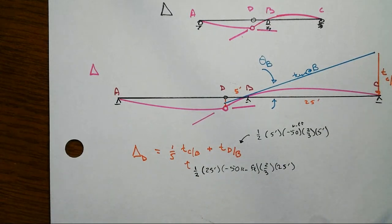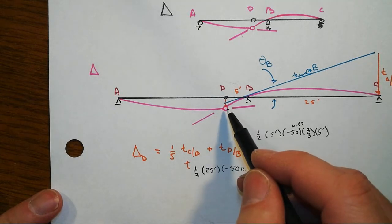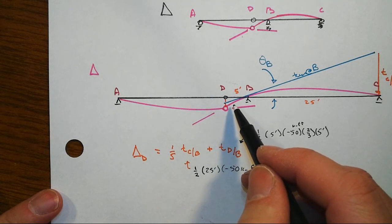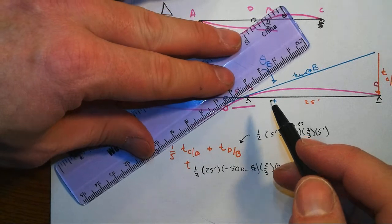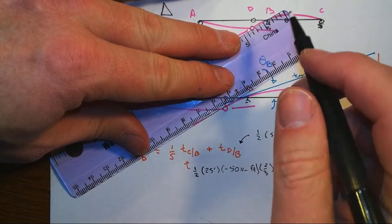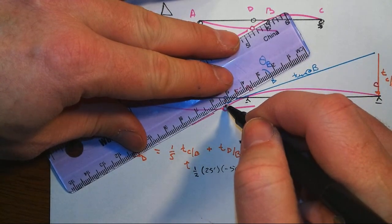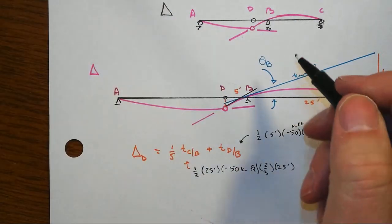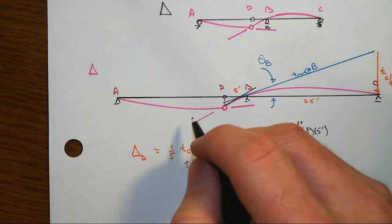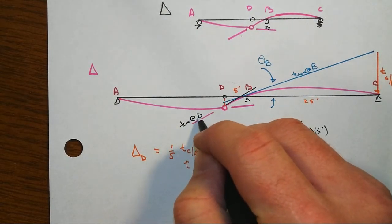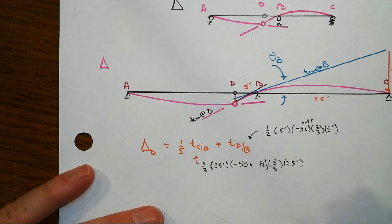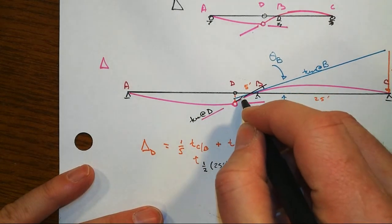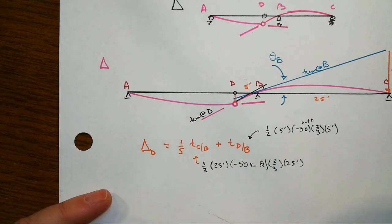Now, what that doesn't give for us though, is what's going on with this slope right here. The way we're going to get that is by noting two things. One, if we take a tangent at D, that's this one right here, tangent at D, then the relative angle change, that's this little guy in here or this little guy in there, either one you want to look at.